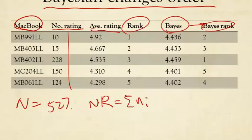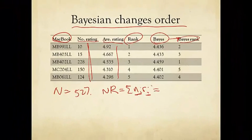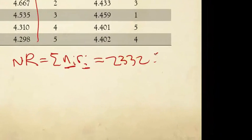And the n times r, which equals ni times ri, this is each of the five products' number of ratings, and ri is each of the five products' average ratings. That turns out to be, you can just multiply and then add up the five numbers to be 2332.052.